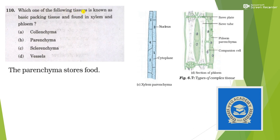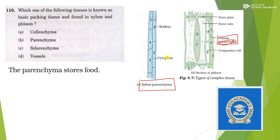Next: which one of the following tissues is known as basic packing tissue and found in both xylem and phloem? The question is asking which tissue is common in both xylem and phloem. There is xylem parenchyma and also phloem parenchyma — parenchyma is common in both. So the answer should be option B — parenchyma.